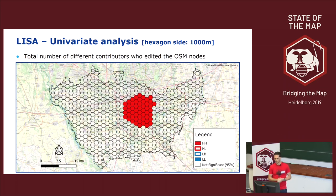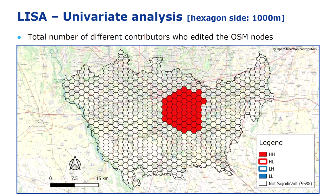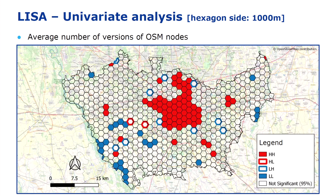Back to the univariate analysis: the total number of contributors who edited the nodes shows the city center of Milan very clearly. Curiously, no low value clusters and no outliers are detected. For the average number of versions of OSM nodes, again a very similar pattern — the city center of Milan is well visible, along with low value clusters scattered in the periphery, and outliers that can tell us something specific about local patterns.